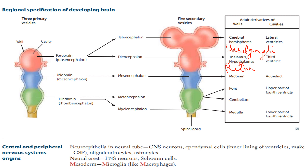Mesencephalon gives us the midbrain. Metencephalon is divided into pons and cerebellum. Myelencephalon gives us the medulla. And from here we have the spinal cord.